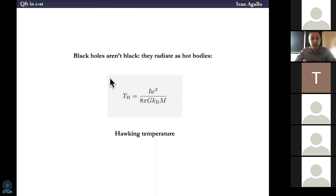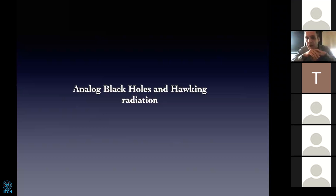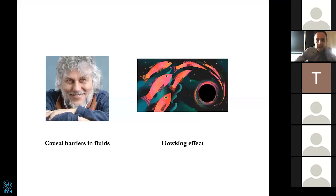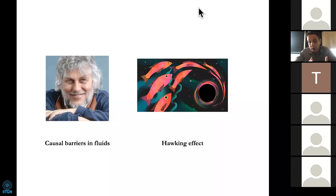This is about astrophysical black holes. But now let me go a step beyond and speak about analog black holes and Hawking radiation. The next chapter in this story was written by Bill Unruh, who realized that the relation between causal horizons, thermodynamics, and hot bodies is not intrinsic or unique to astrophysical black holes — this relation is way more general. In fact, he showed it using fluids.